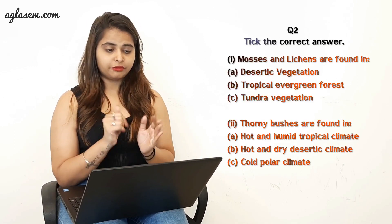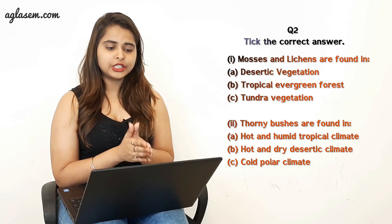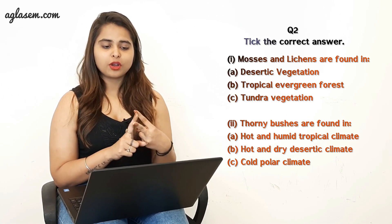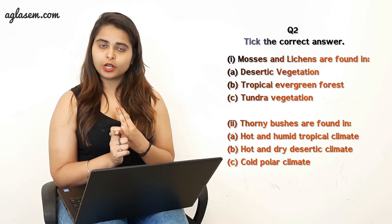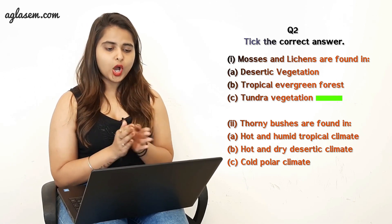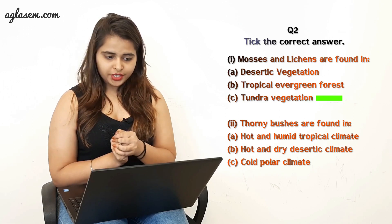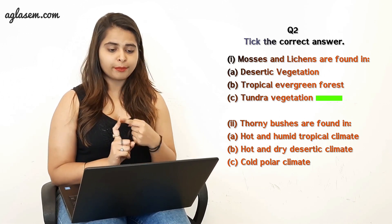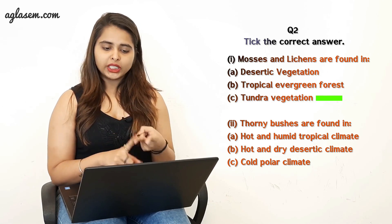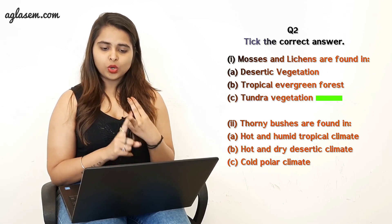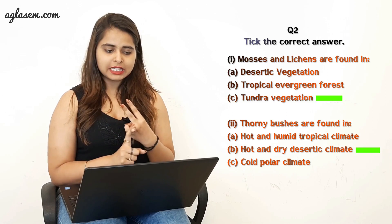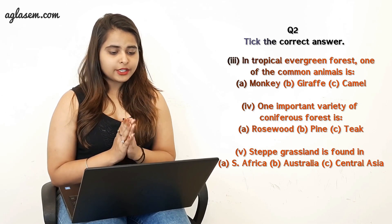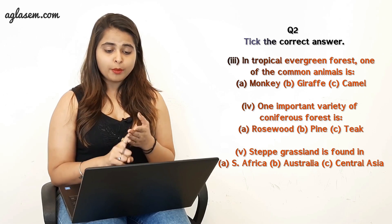Now moving to question two: tick the correct answer. The first part asks where mosses and lichens are found — the options are desertic vegetation, tropical evergreen forest, or tundra vegetation. The answer is tundra vegetation. The second part asks where thorny bushes are found — hot and humid tropical climate, hot and dry desertic climate, or cold polar climate. The answer is hot and dry desertic climate.